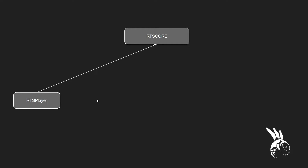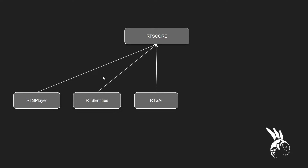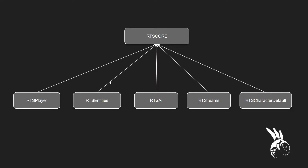Some of the other plugins we'll probably have are RTS Entities, RTS AI, RTS Teams, and probably some sort of default character to show how to set up a character for this framework. There will be some dependencies across the plugins, but we'll try to limit them to one direction. There's probably going to be a dependency between RTS Entities and RTS AI, because Entities is essentially the units in the RTS — all the functionality needed for units, whether a character, vehicle, or spaceship. RTS AI will logically need to be used by those units.